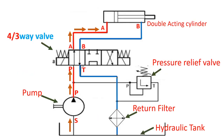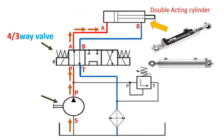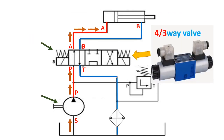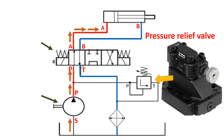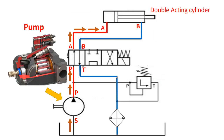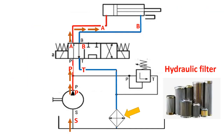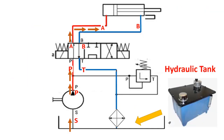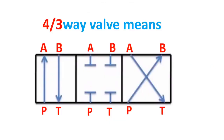Hydraulic is derived from the Greek word hydro meaning water and aulos meaning pipe. Now let's discuss the components of a hydraulic system, including the double acting cylinder, four-three-way directional control valve, pressure relief valve, hydraulic pump, and hydraulic filter. Before reading a hydraulic schematic diagram, let's first discuss the directional control valve, as it is the most important component of the hydraulic system.